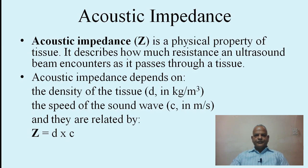Acoustic impedance Z is a physical property of the tissue. It describes how much resistance an ultrasound beam encounters as it passes through a tissue. Acoustic impedance depends on the density of the tissue (in kg/m³) and the speed of the sound wave C (in m/s), and they are related by the equation Z = ρ × C.